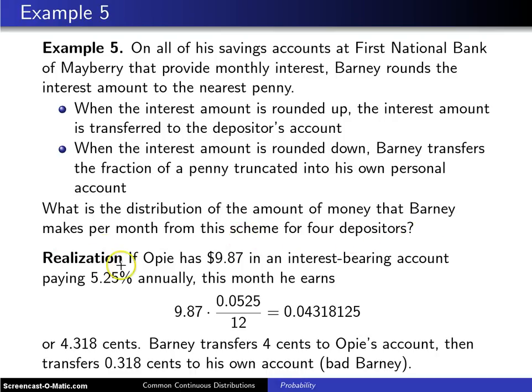Now let me give you a quick example. This is a realization for just one depositor. Here, if Opie has $9.87 in an interest-bearing account that pays 5.25% annually, in one particular month, how much will he earn?